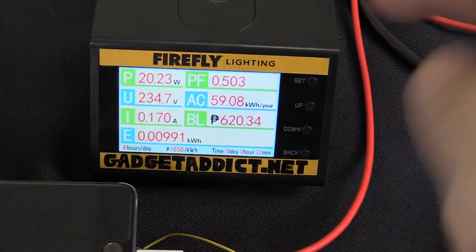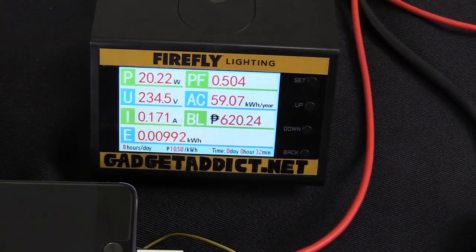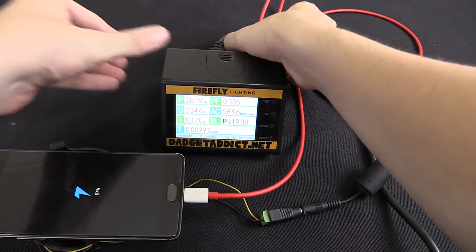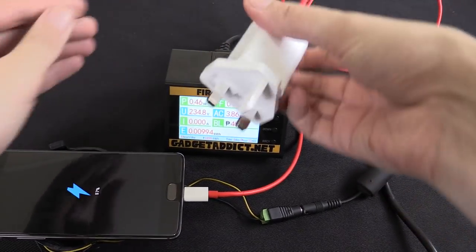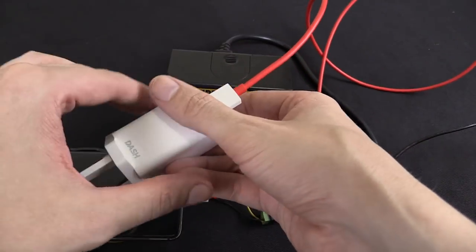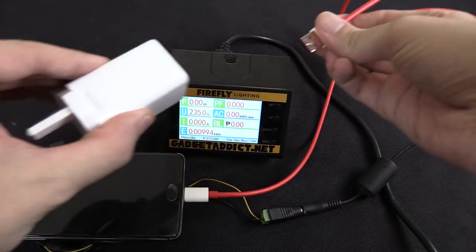Now if I zoom in on the watt meter here you can see that it's currently consuming 20 watts. And I know what you're wondering, well what happens if you use a different charger, one that isn't this special dash charger? How much power does it consume then? Well let's try it out.